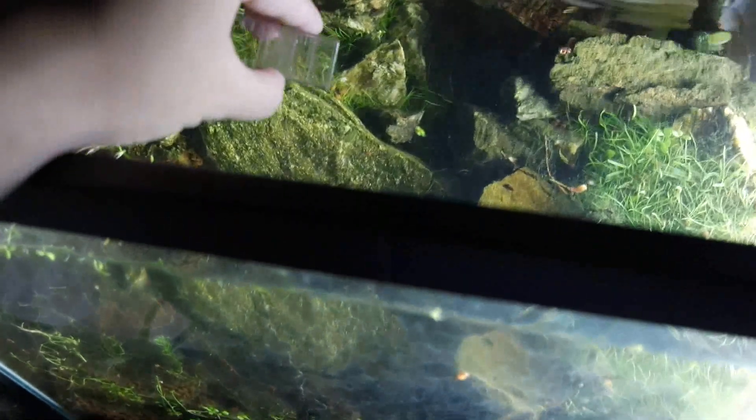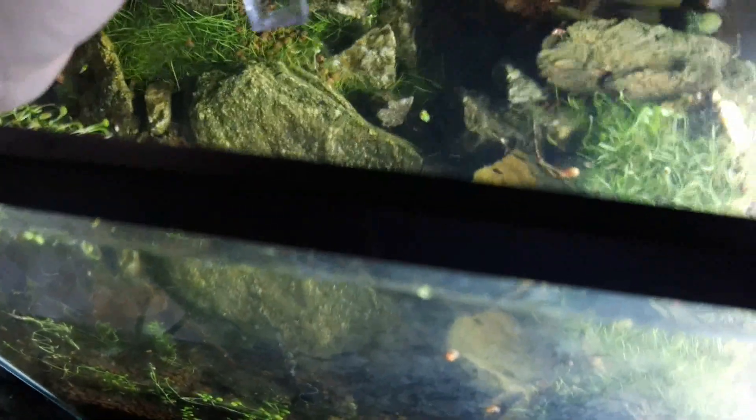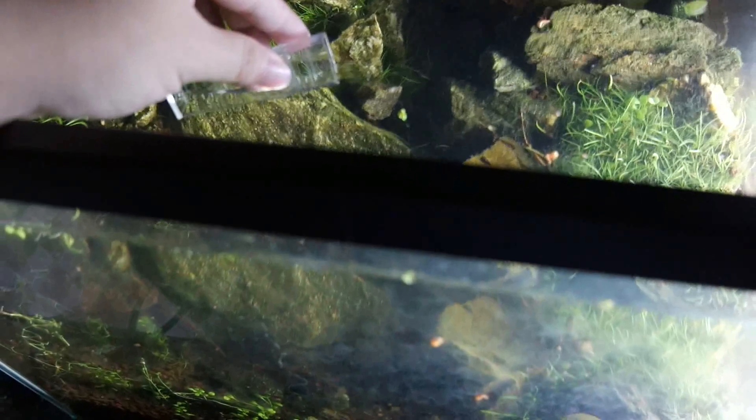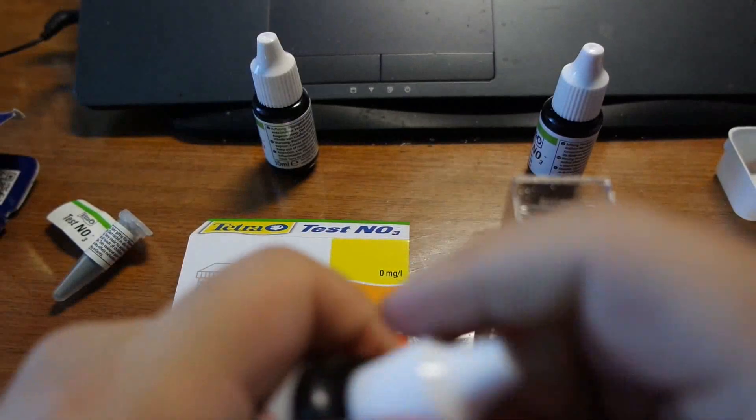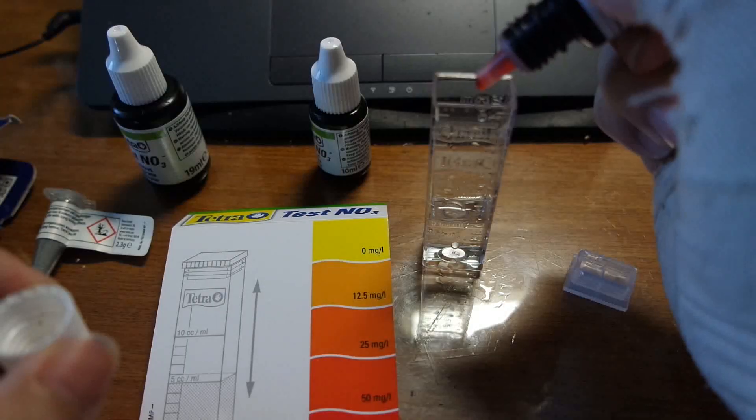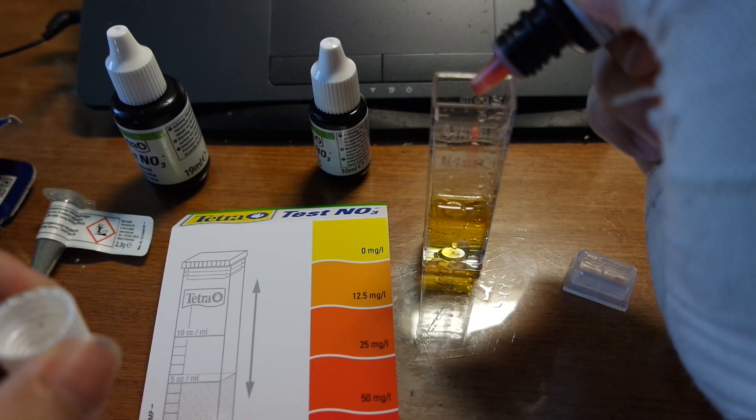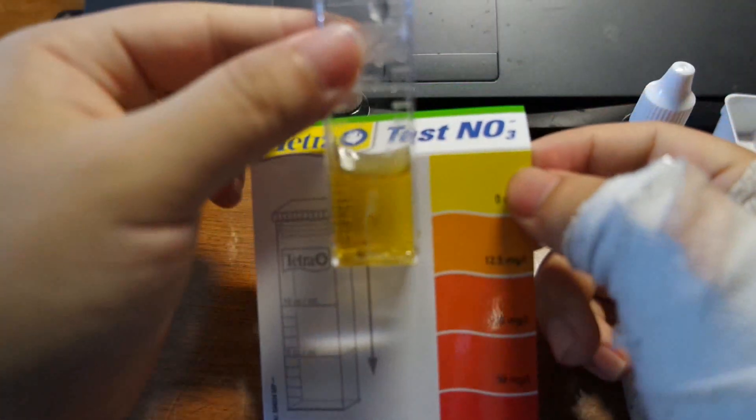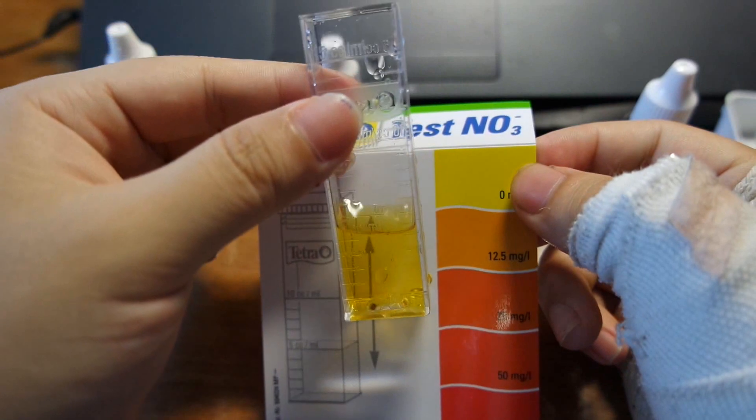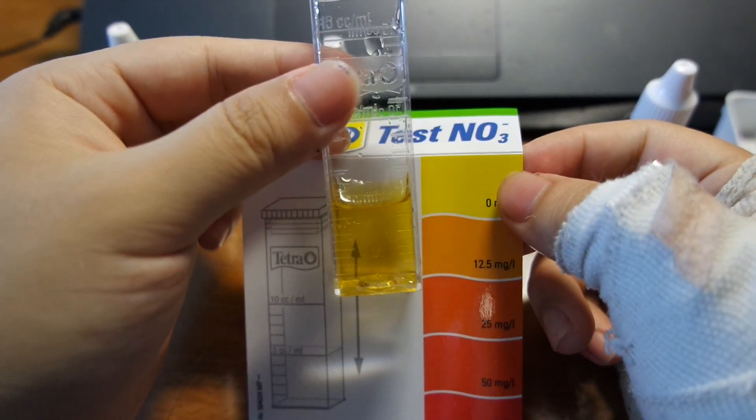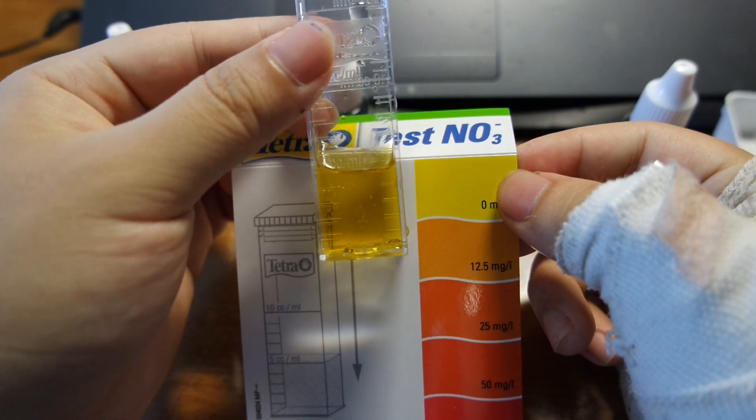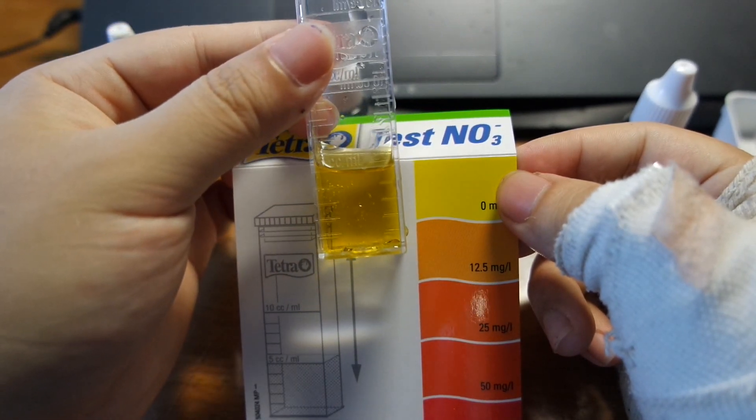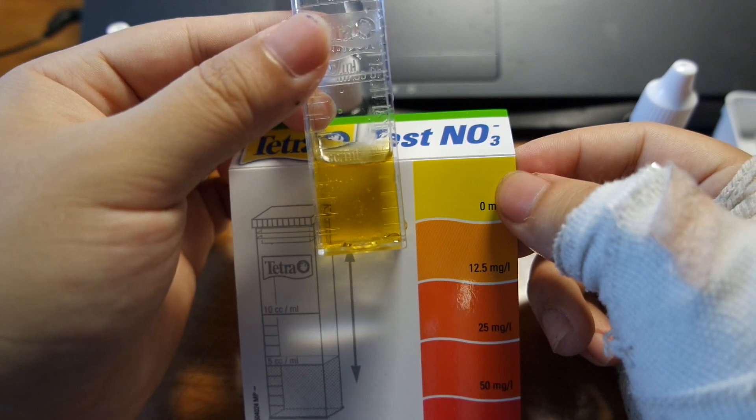Okay next up is my 12 gallon planted aquarium. I will be getting a little bit of water here. Basically I will be doing the exact same thing here. Okay so it has been about 10 minutes and the reaction is complete. Let's look at the color and the 12 gallon is also right about 0 there. It is pretty yellow so that is good. So my 12 gallon planted tank also has almost no nitrates.